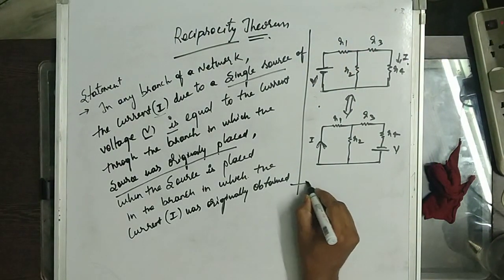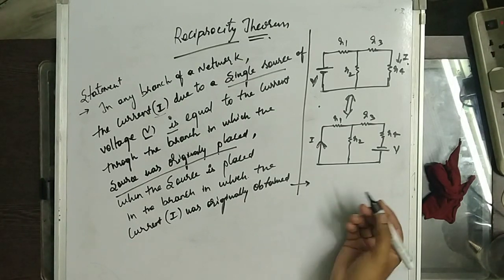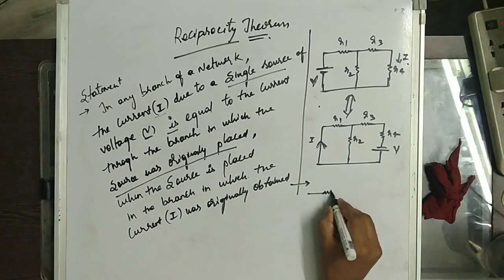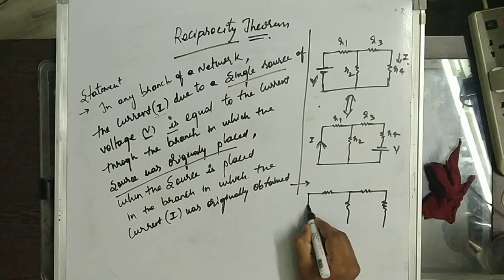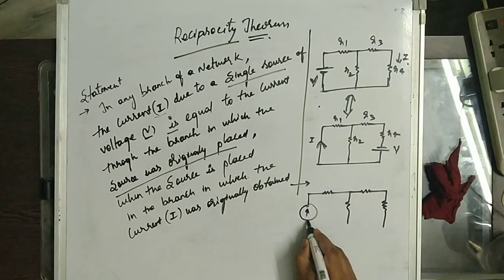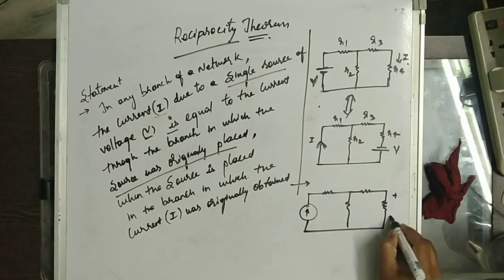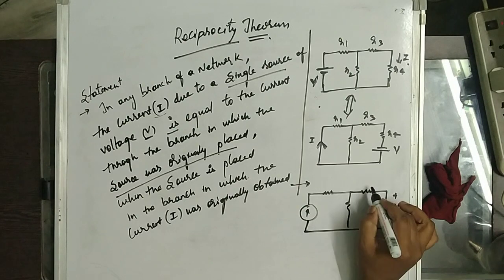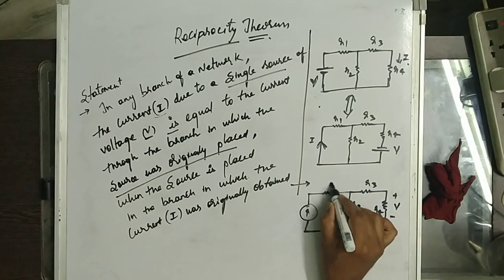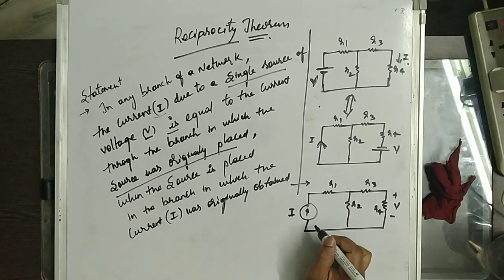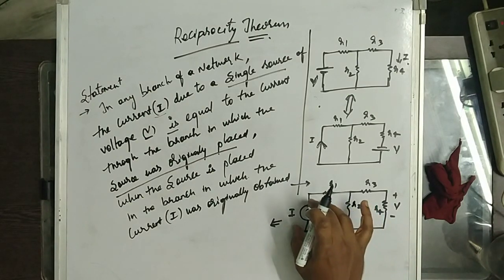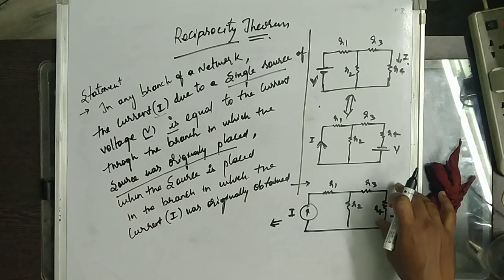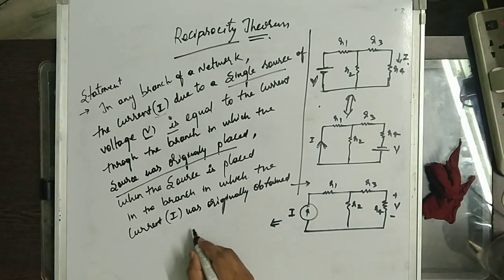If the input is a current source, how will we get the reciprocal circuit? Now I am taking the input as a current source and the response I take is the voltage across a branch. This is R4, R3, R2, and R1. The reciprocal circuit of this original circuit is: we will replace this current source to the response branch, connected in parallel with the response branch.